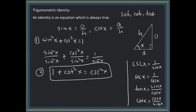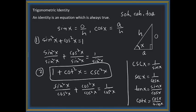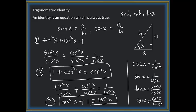For the third identity, we divide the first identity by cosine² x. We get sine² x / cosine² x + cosine² x / cosine² x = 1 / cosine² x. Sine over cosine is tangent, giving tangent² x. Cosine squared over cosine squared is 1, and 1 over cosine is secant. So we get tangent² x + 1 = secant² x.